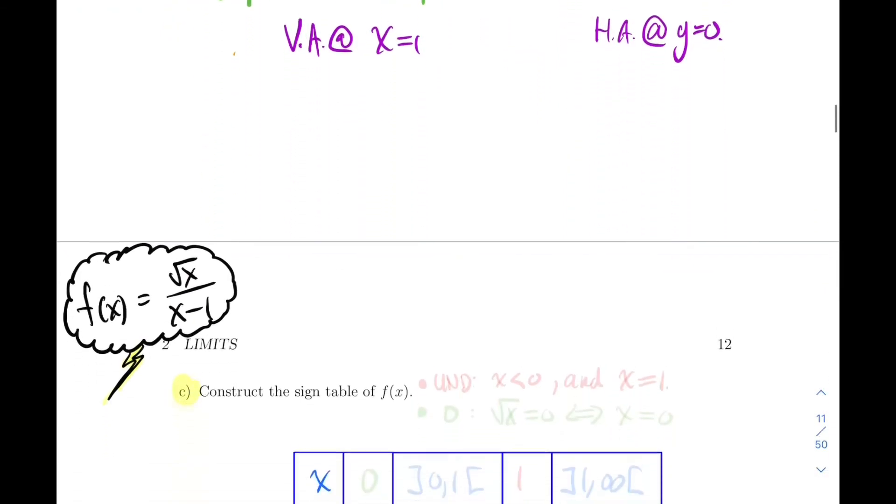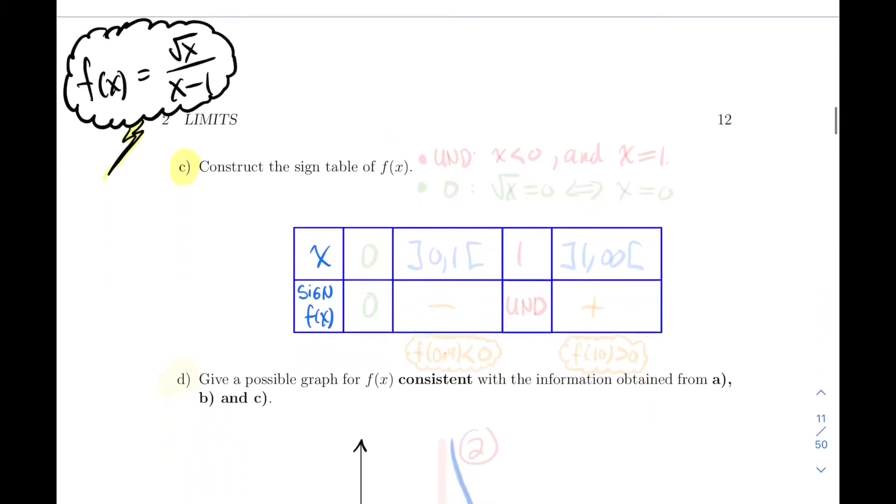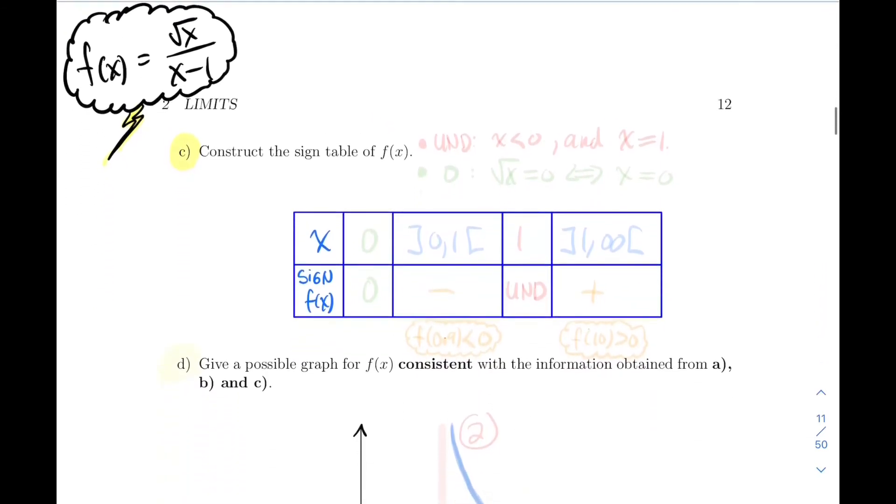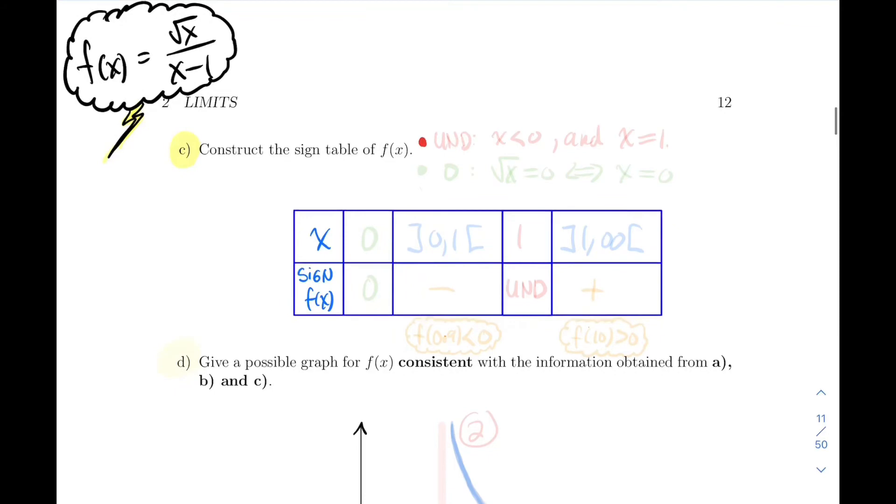Next, let's compute the sign table. Of course from the computation of the domain, we know that when is it undefined? Well, it's undefined when x is strictly less than zero and when x is equal to 1.